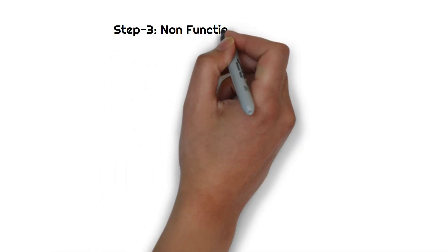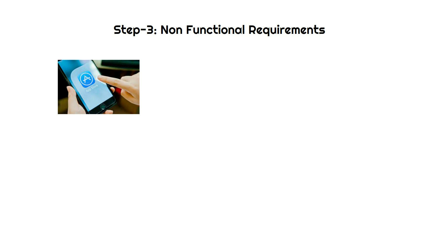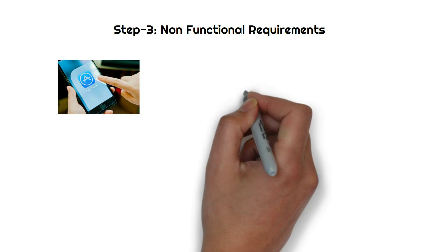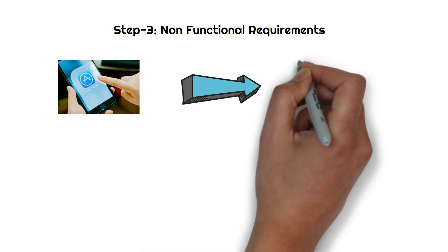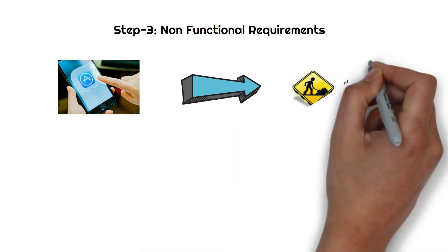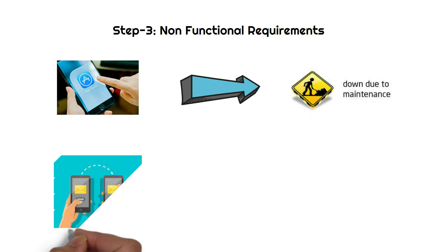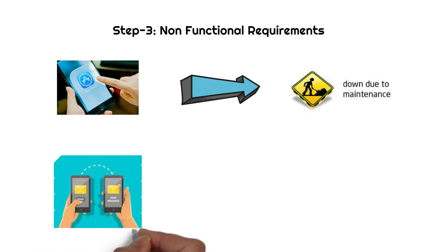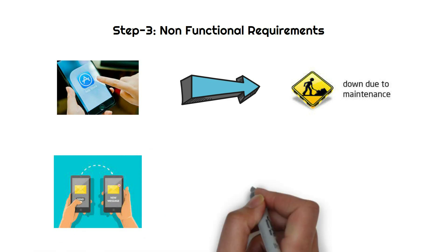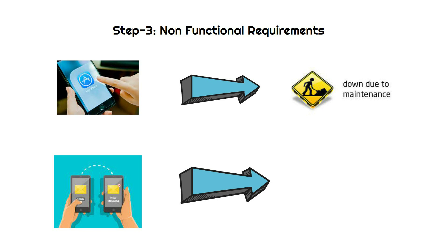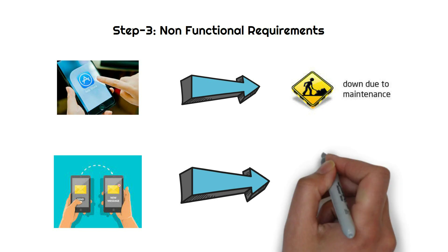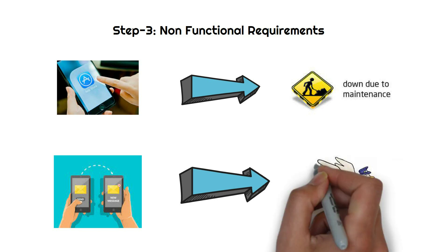Let's look at non-functional requirements. If a user is using our application and it shows that the application is down due to maintenance, that's not good customer experience. Another thing is that if a person is sending a message to a friend, it should be fast enough, unlike older times.